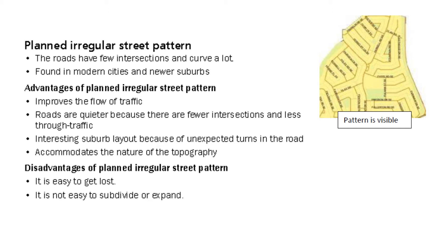The planned irregular pattern — these next two go together, they're both irregular, but this one is planned. We call it that because you can definitely see there is a pattern visible. The advantages are improved flow of traffic, it's an interesting layout, and it takes into consideration the topography. If you've got very steep slopes, it's better to have roads going along the contour lines rather than straight up and straight down. The disadvantage is that it is really easy to get lost.